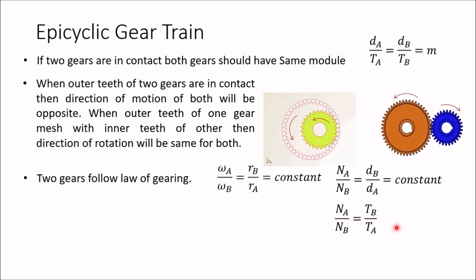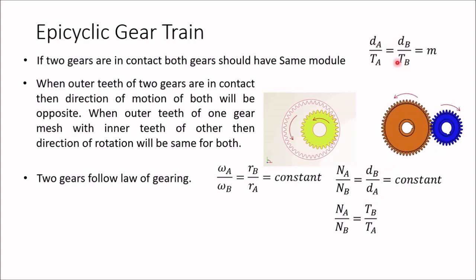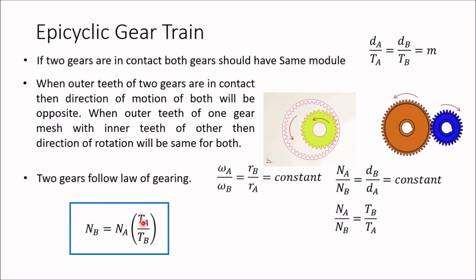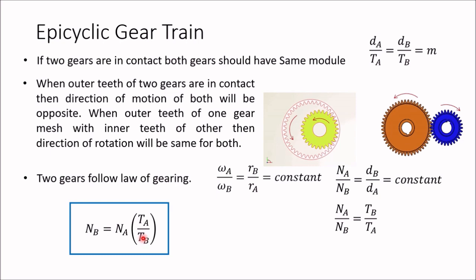From this relation, the speed of gear B equals the speed of gear A multiplied by the number of teeth on A divided by the number of teeth on B: N_B = N_A × T_A / T_B. So whenever you write the speed of one gear, the number of teeth of that gear goes in the numerator and the other gear's teeth count goes in the denominator. This is very important because this is the basis for analyzing the epicyclic gear train.